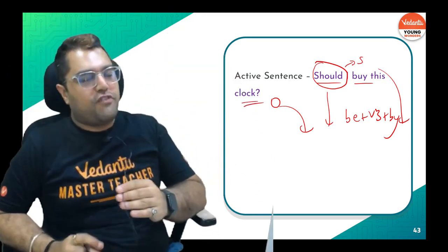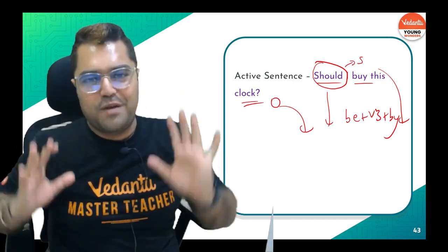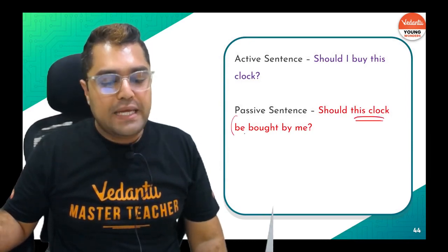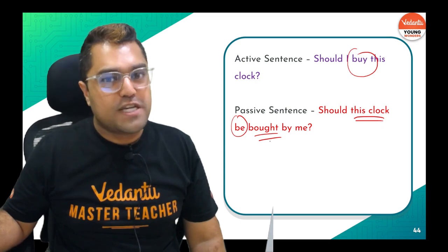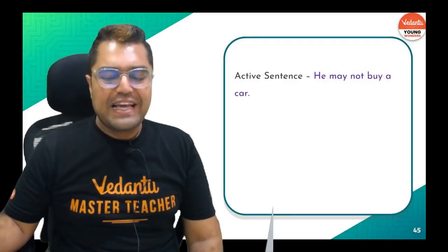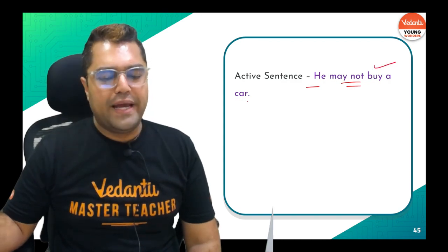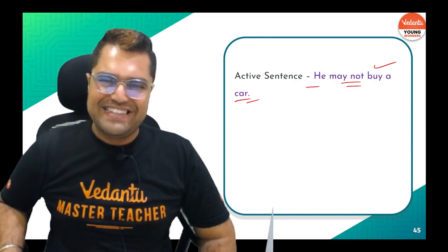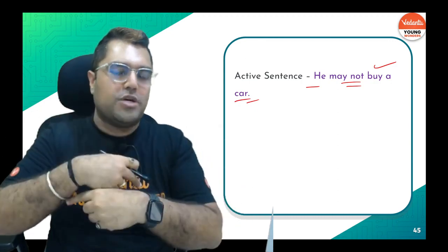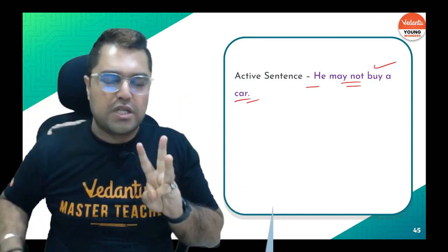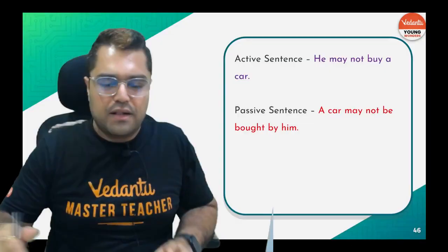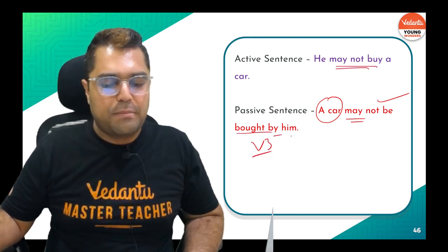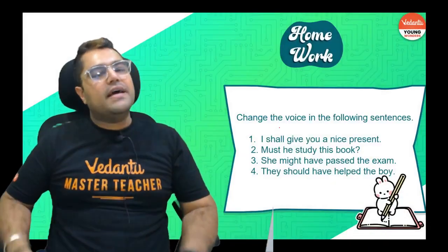Answer: 'Should this clock be bought by me?' — V3 of 'buy' is 'bought.' Next: 'He may not buy a car.' Full speed — model position doesn't change, subject and object interchange, 'be + V3 + by.' Answer: 'A car may not be bought by him.' That's all — easy peasy!